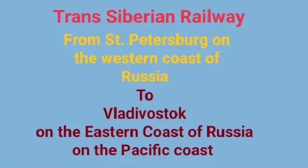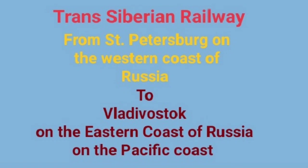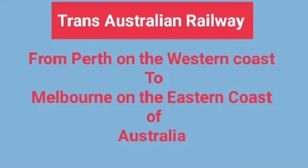The Trans-Siberian Railway extends from the Atlantic coast in the west to the Pacific coast in the east. It starts from Saint Petersburg in the west, on the Atlantic coast of Russia, and passes through the whole of the Eurasian continent, going to Vladivostok on the Pacific coast in the east. This transcontinental railway connects the eastern side of Asia with the western side of Europe.